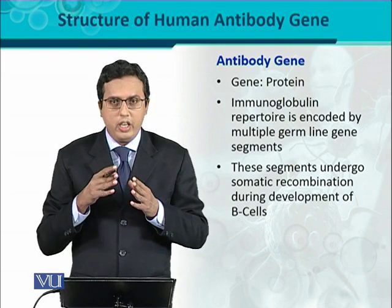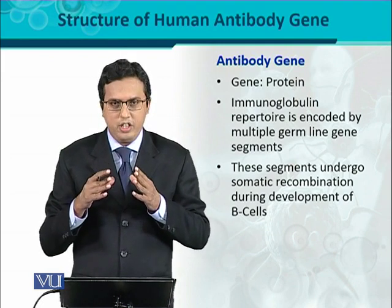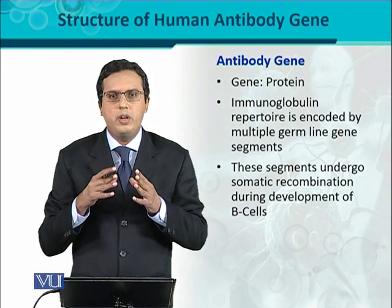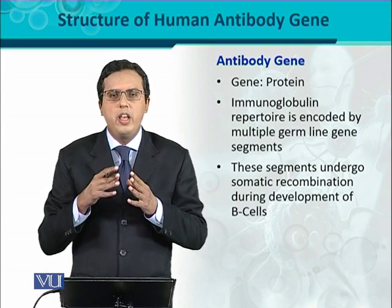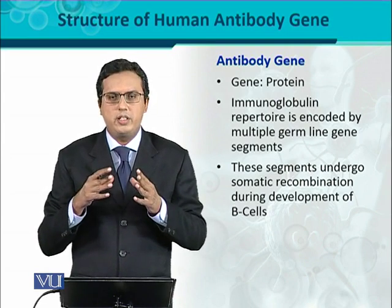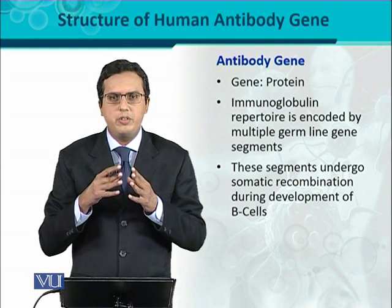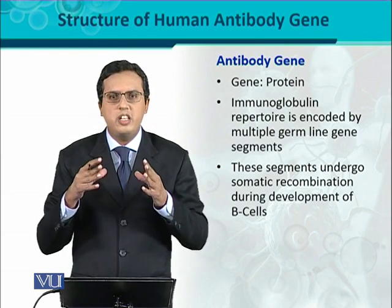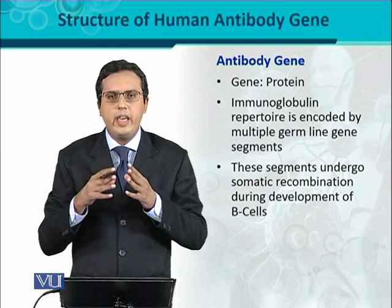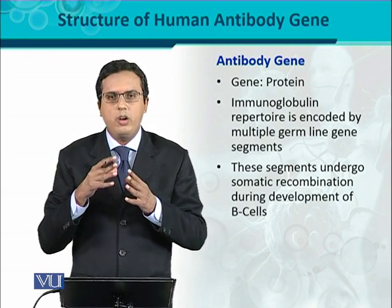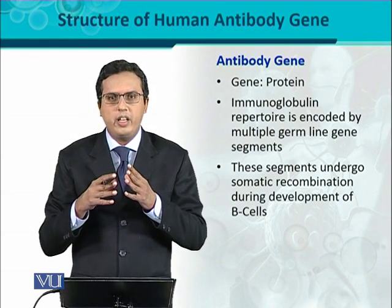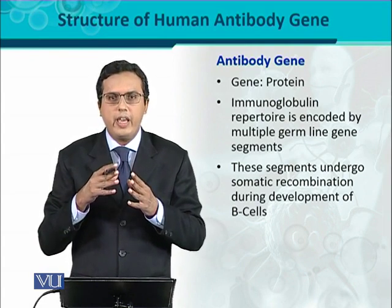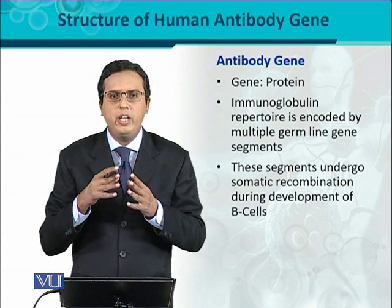These segments undergo somatic recombination — that means during the development of B cells. B cells are responsible for producing antibody-producing cells which are called plasma cells. During B cell maturation, the immunoglobulin genes are rearranged in such a manner that each time a new rearrangement occurs, and with each gene rearrangement, a B cell is produced and matures that will produce one specificity of antibody.